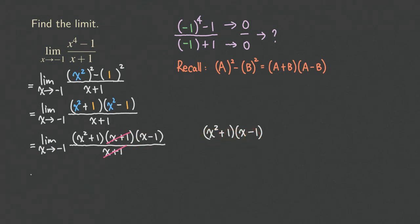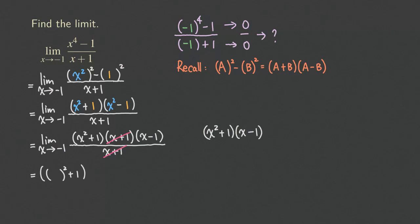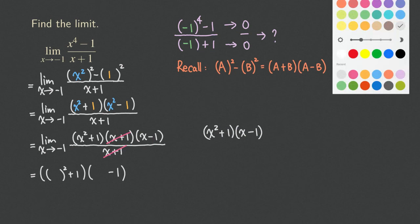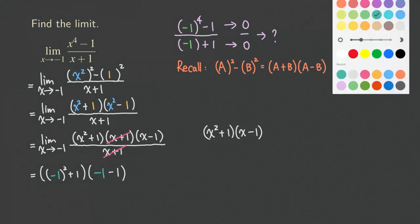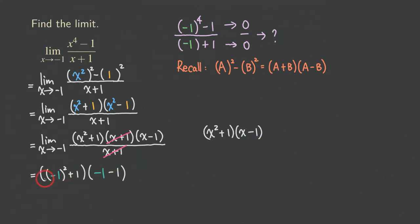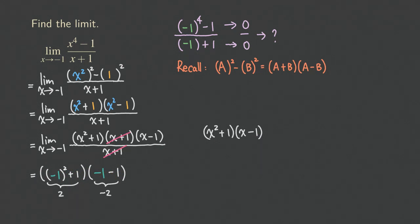Plugging in negative one: the first factor gives negative one squared plus one, which is one plus one, equals two. The second factor gives negative one minus one, which equals negative two. Multiplying those together, two times negative two gives us negative four. So the final answer is negative four.